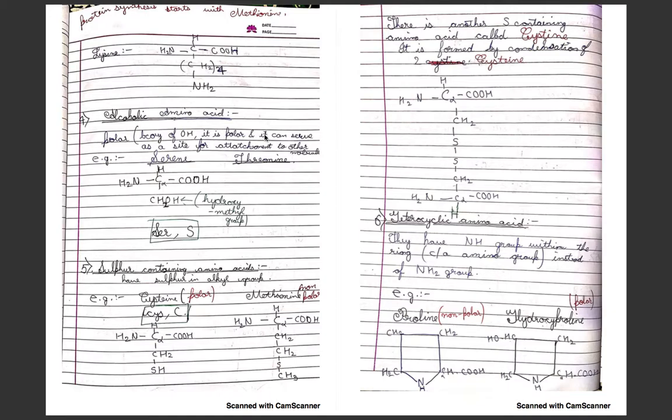Alcoholic amino acids have OH in their alkyl chain. Examples are serine and threonine. Serine is polar. Sulfur-containing amino acids have sulfur in their alkyl group. Examples are cysteine and methionine. Cysteine has CH2-SH in the alkyl group, and methionine has CH2-CH2-S-CH3. There is another sulfur-containing amino acid called cystine, which is formed by the condensation of two cysteines.